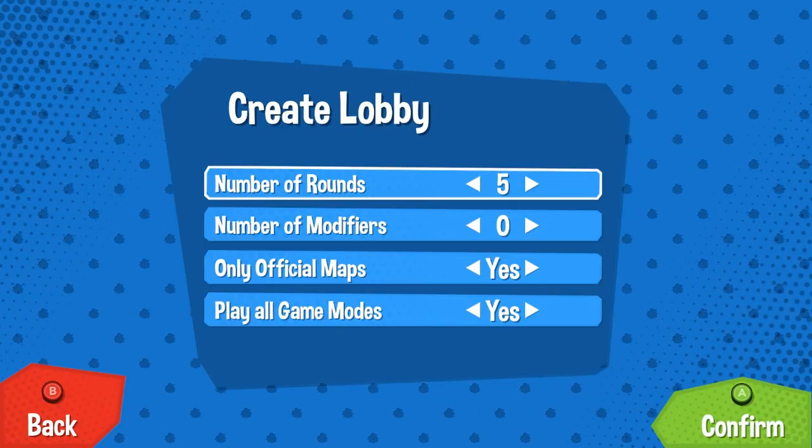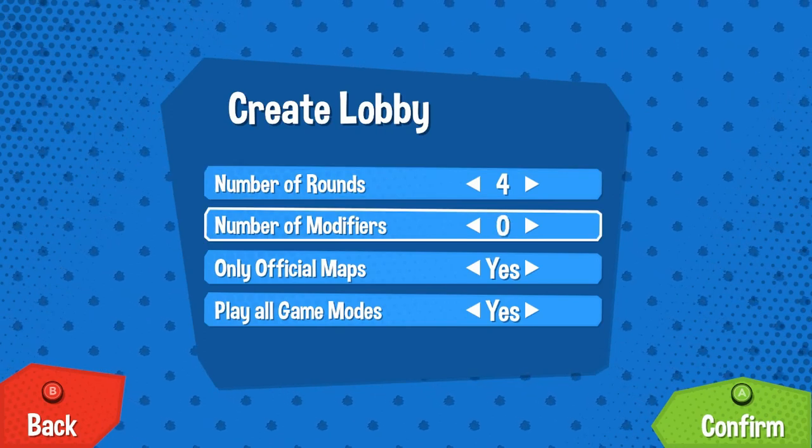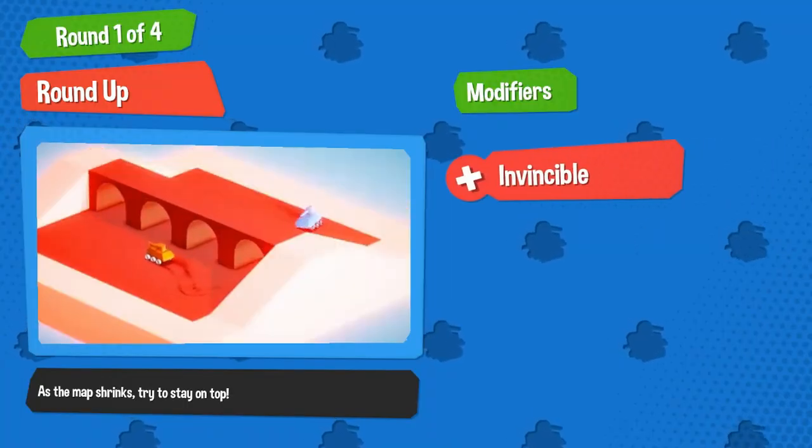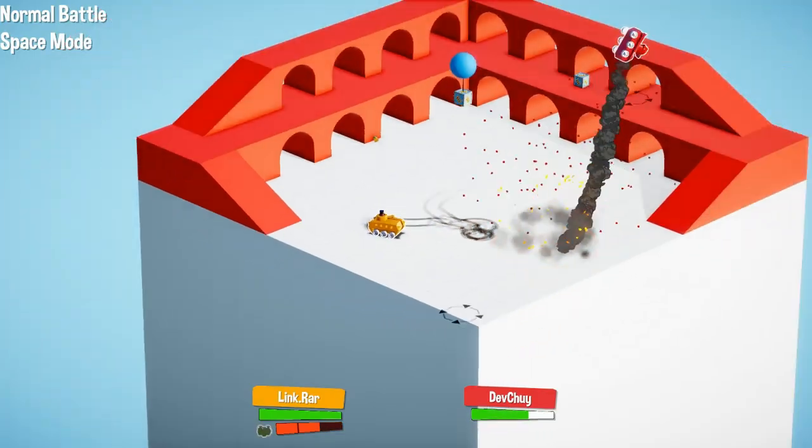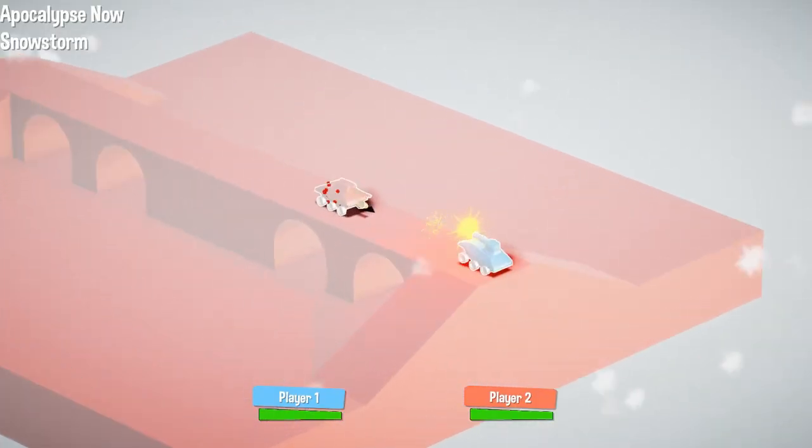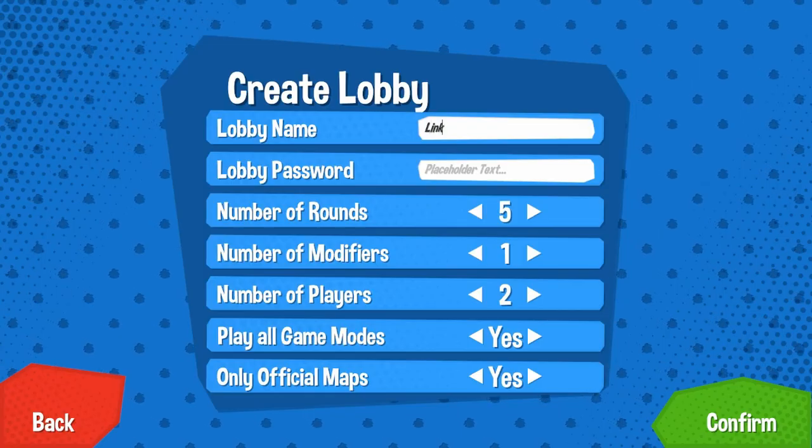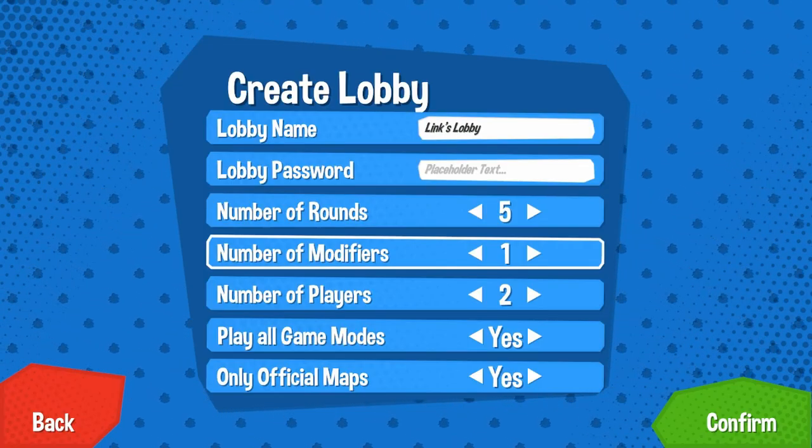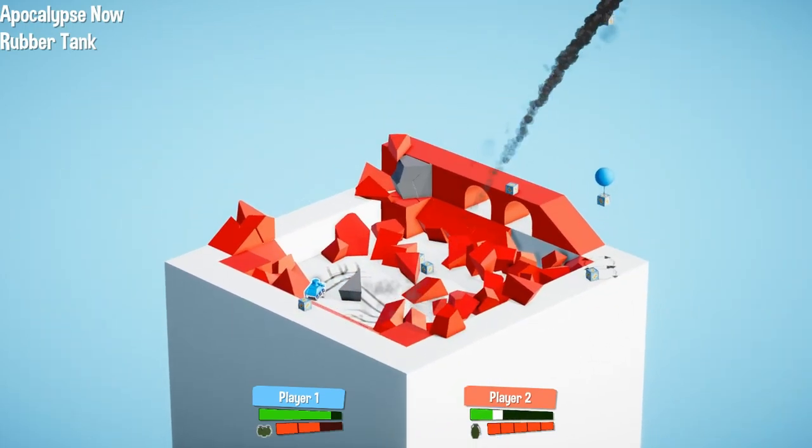Not only that, but each game can be played with modifiers to make the game that much more entertaining. Everything from invincible tanks to high gravity to snowstorms can be added to your levels. While you currently can't select the modifiers that you play with or how many you can have in a game, I wouldn't be surprised if that functionality is added in the future.